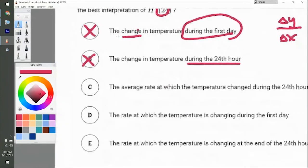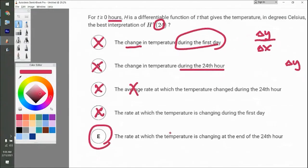C is definitely not going to be it because of the average rate of change. D, the rate at which the temperature is changing during the first day. So it's not that based on the same thing I said for A. So E is the answer, the rate at which the temperature is changing at the end of the 24th hour. Exactly at that spot. Not the full 24 hours, just the exact 24th hour.